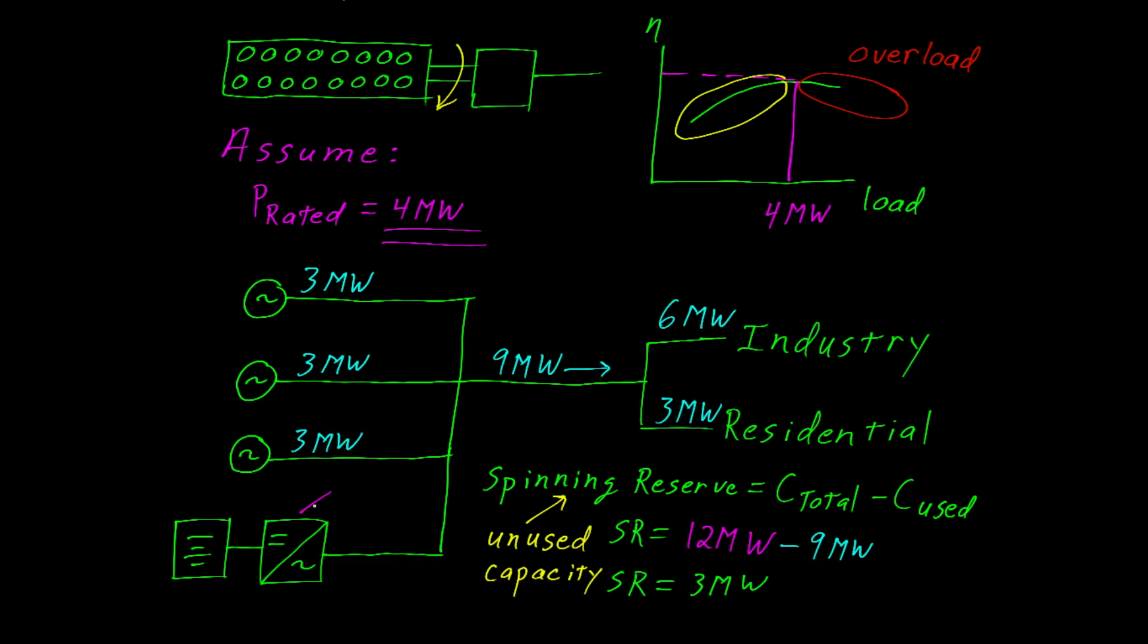Before we finish, let's include this battery backup into our spinning reserve calculation. For the sake of argument, assume the converter can provide the same amount of power as the generator, which was 4 megawatts. But notice it can only do it for 5 minutes.